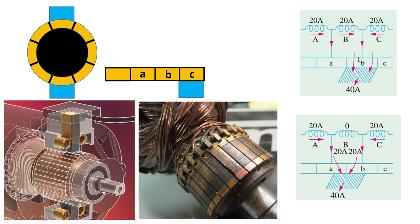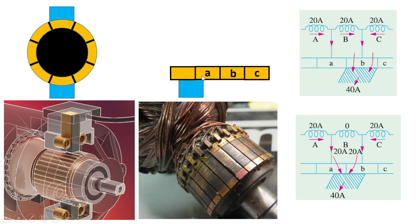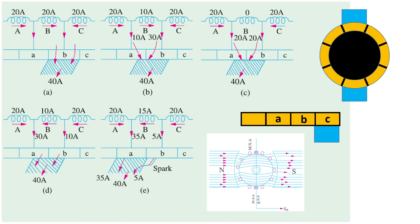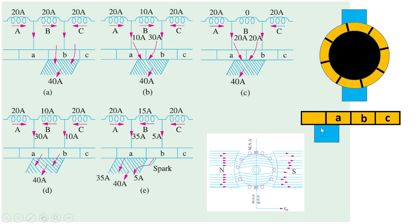To understand why poor commutation happens, we first need to understand how to read the diagrams. In most textbooks, an animation of a rotating commutator segment is shown. If we open the commutator and treat it as a flat structure, the segments change contact with the brush over time. Looking at different positions: first the brush is in contact with segment B, then with both segments A and B, then only segment A, and so on. These diagrams represent different situations during commutation.